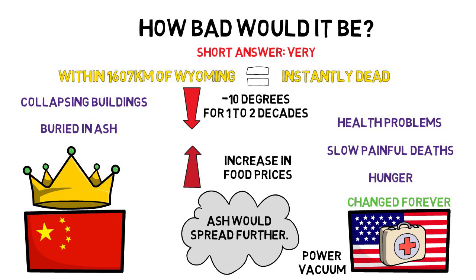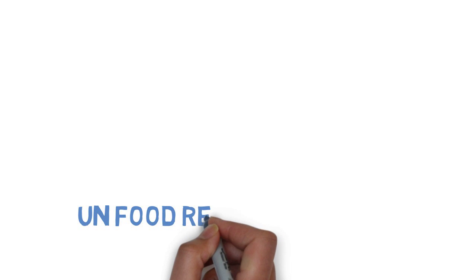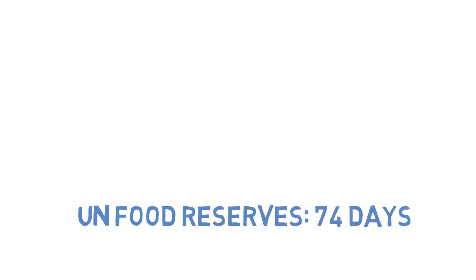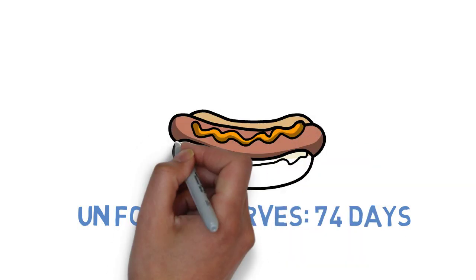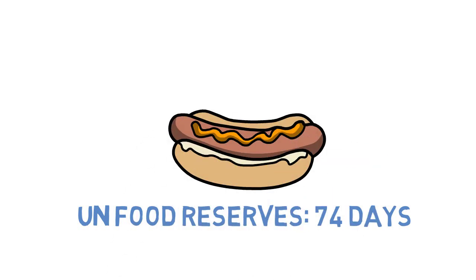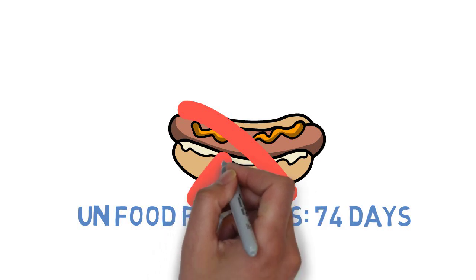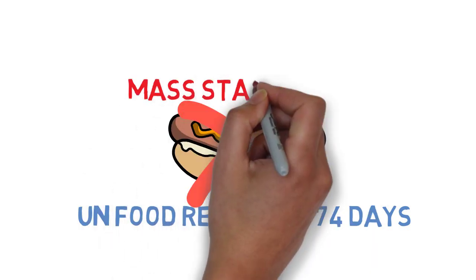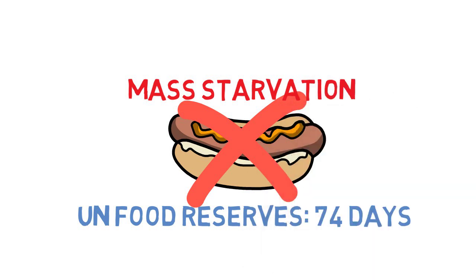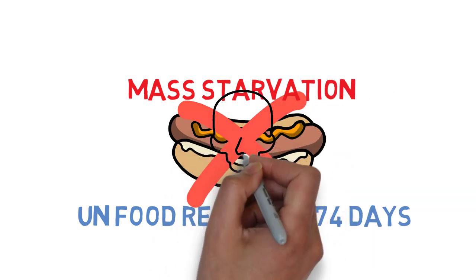In fact, according to the BBC and the United Nations, food reserves would only last 74 days worldwide. So, what happens after that? When crops can no longer grow and eventually there is not enough food to feed the current population. Two words, mass starvation, which would be the biggest threat to the human race for decades to come.